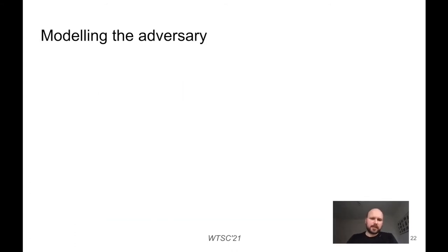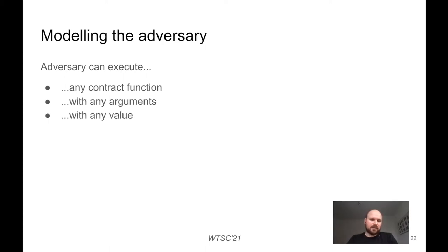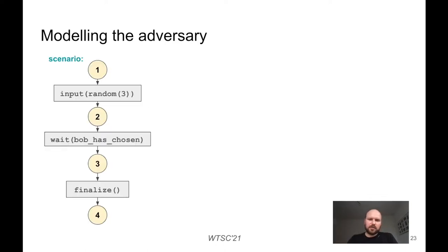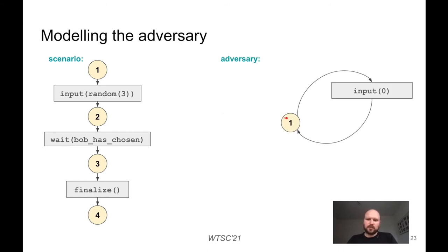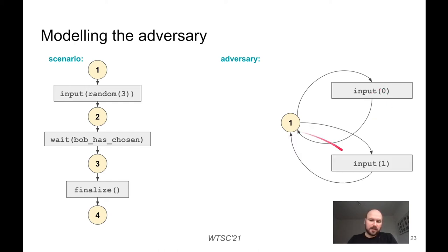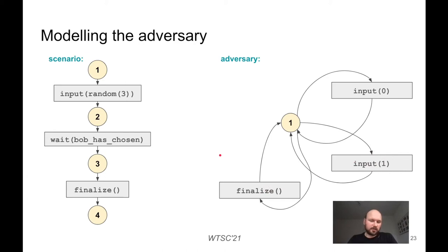We decided not to limit the power of the adversary. Our adversary can execute any contract function with any arguments, any value, at any time. For a contract with two functions — input and finalize — the honest scenario is a sequence of calls and WAIT commands. The adversary, on the other hand, is modeled as an automaton with only one state, from which he can execute the input function with argument 0 or 1, execute finalize, and all other functions with all possible arguments and values.